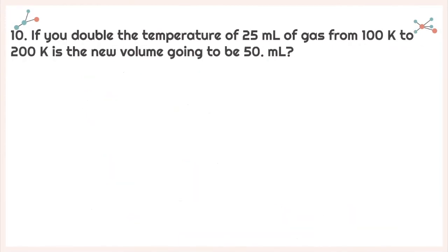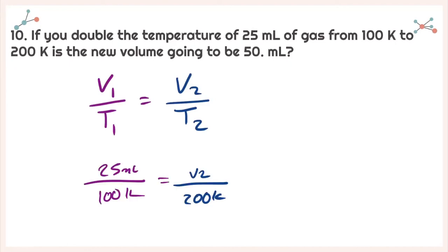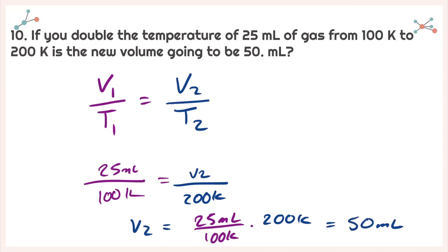Let's look at number 10. For number 10, instead of doubling our temperature in Celsius, now we're doubling our temperature in Kelvin — 100 degrees Kelvin to 200. Same equation: V1 over T1 is equal to V2 over T2. Plugging in, I need to solve for V2. Solving for V2, I get 25 milliliters over 100 degrees Kelvin times 200 Kelvin, giving me a new volume of 50 milliliters. What was the difference? Before we were doubling our temperature in degrees Celsius, but now we doubled our temperature in Kelvin. That's why we have a standard temperature — so that all of our calculations make sense. If we're doubling in Celsius, it's not the same as doubling in Kelvin.